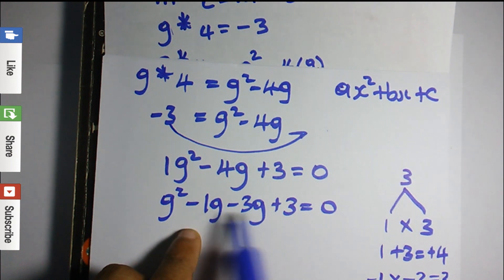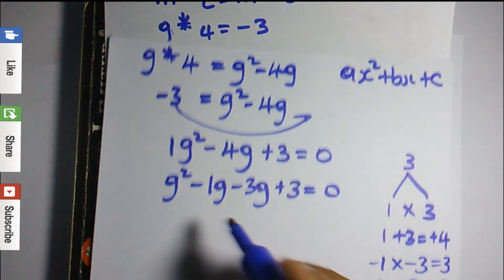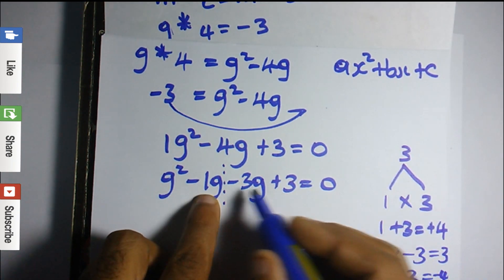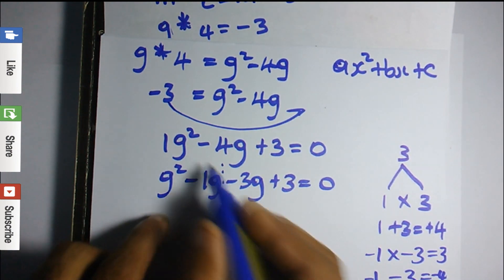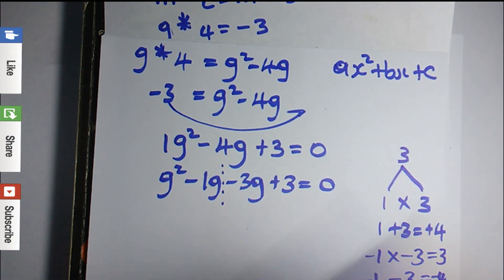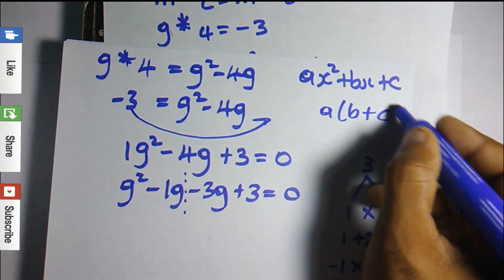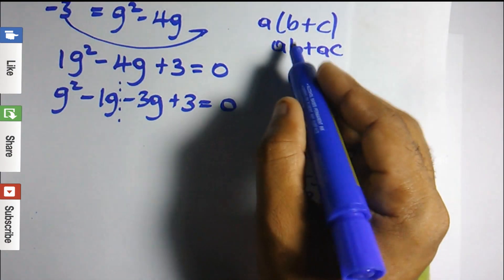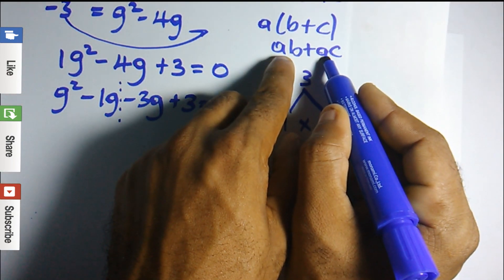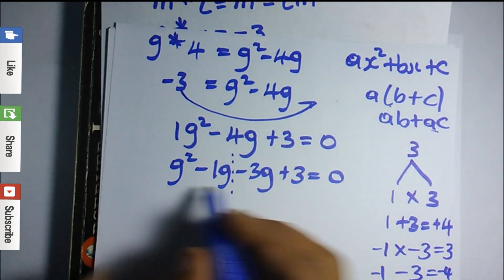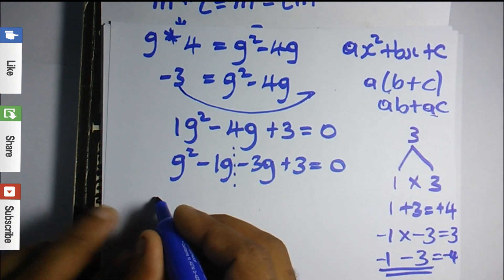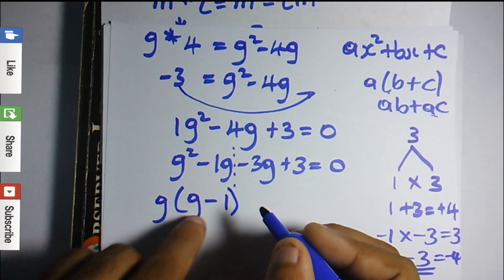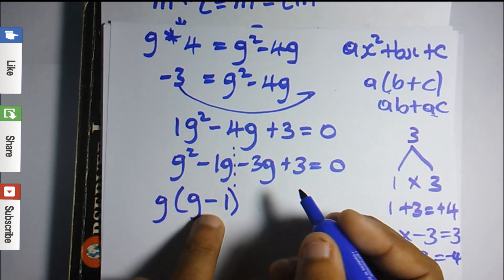Now we factorize by grouping. I'll separate the two pairs and apply the distributive law. For the first pair, g is common: g times g gives g squared and g times negative one gives negative g, so we get g(g minus 1). For the second pair, 3 is common: 3 times negative one gives negative 3, giving negative 3(g minus 1).